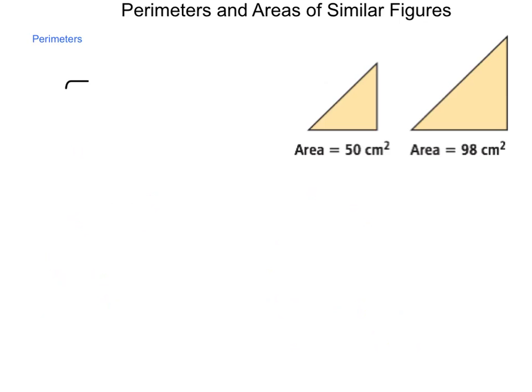So since we're dealing with area, we know that a squared over b squared is the association. So let's take this and simplify each of these. So a squared is 50, and b squared is 98.